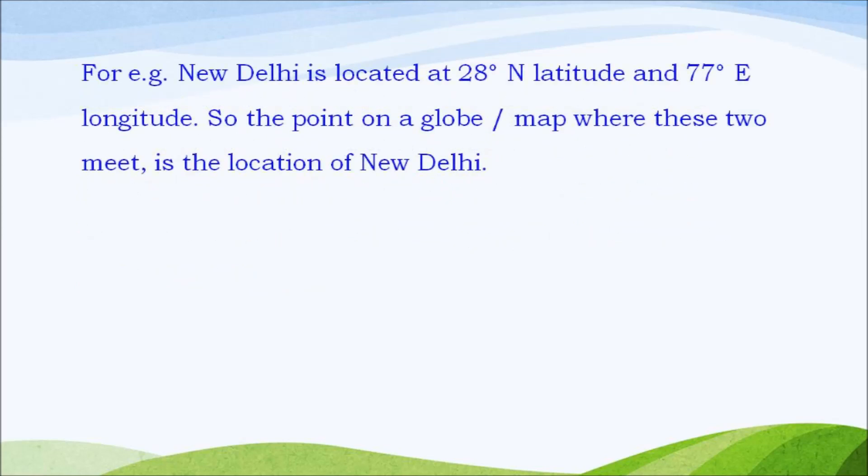For example, New Delhi is located at 28 degree north latitude and 77 degree east longitude. So the point on a globe or map where these two meet is the location of New Delhi.